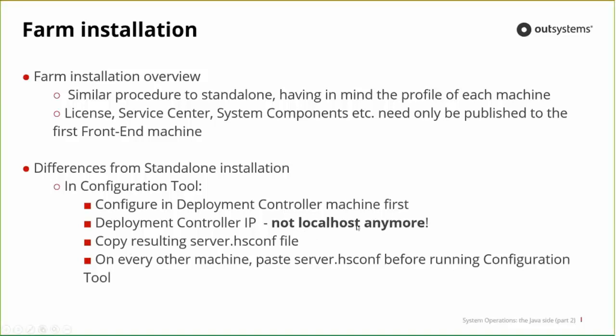The procedure is pretty much the same as a standalone. Just have in mind that the controller IP address needs to be the IP or name of the server. In terms of licensing for a frontend, you have just one license for the whole environment, and you only need to publish system components once — then they are deployed to all the different machines. Deployment controller machine must be configured first, and the deployment controller cannot be localhost.